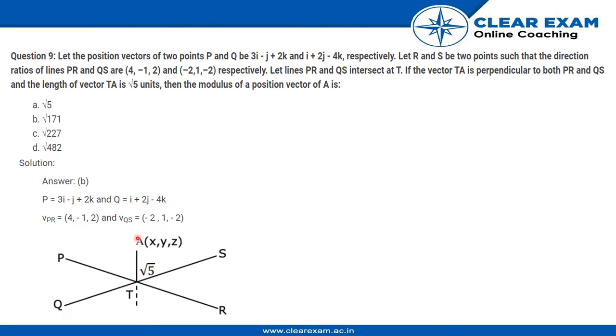Now if a vector TA is perpendicular to both PR and QS, so that means there is a 90 degree to both of these vectors. And the length of TA is root 5 units and the modulus of the position vector A is. So we need to find the modulus of this vector from the origin.